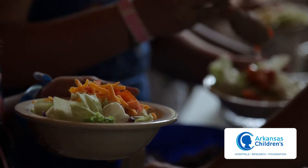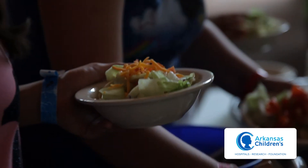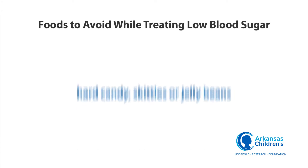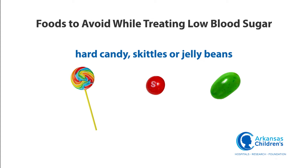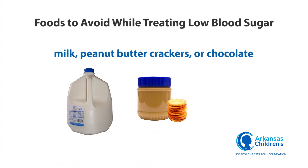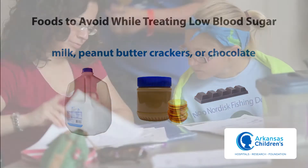There are some foods that should be avoided when treating low blood sugars. These would include any type of hard candy, Skittles, or jelly beans, as these could all pose a choking hazard for someone who may be confused from a low blood sugar. You also do not want to use milk, peanut butter crackers, or chocolate, as all of these will take too long to bring the sugar back up.